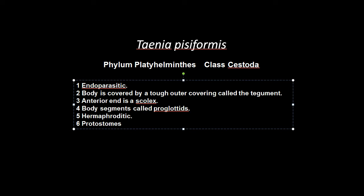At the anterior end is a scolex, which latches on to the inside of the host's intestine so that the animal can feed and acquire nutrients through diffusion.